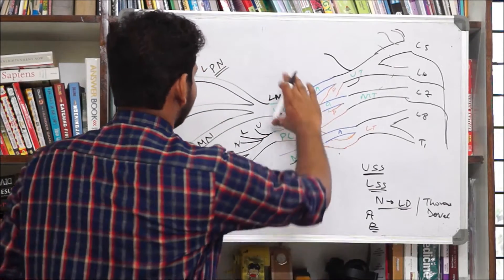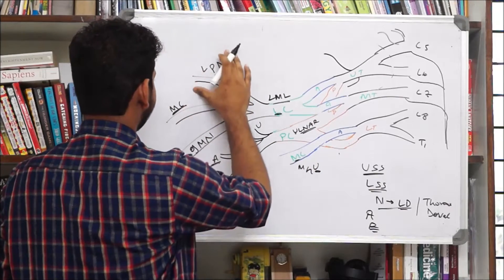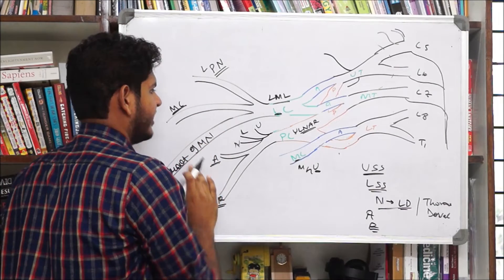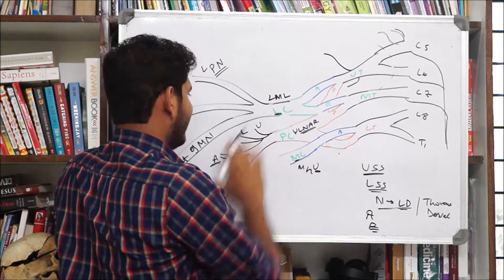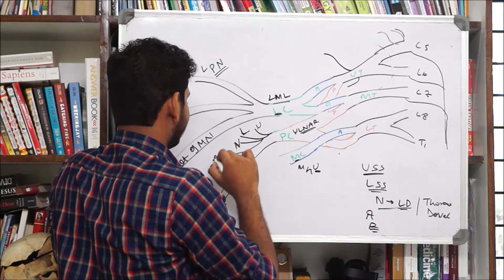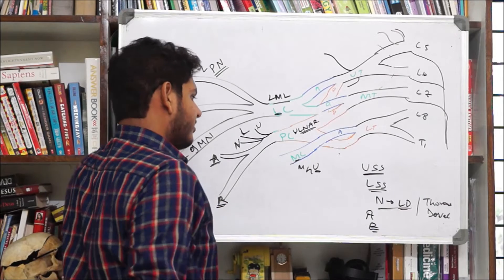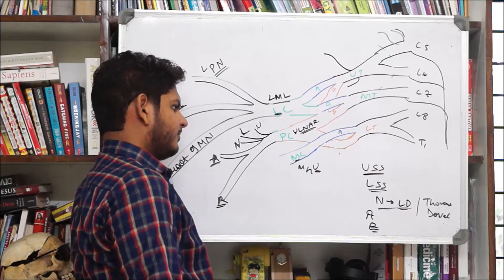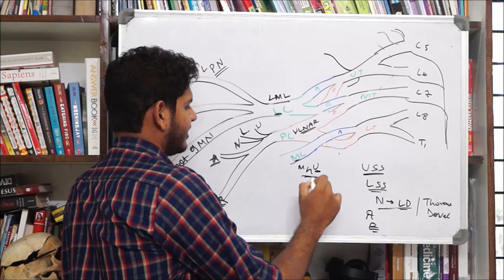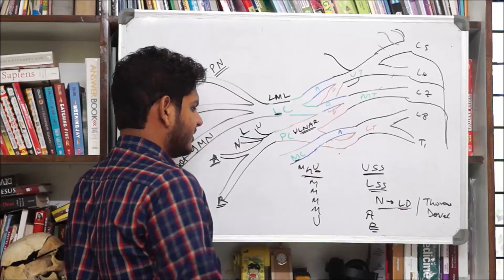Let's revise again. Lateral cord — it is LML: lateral pectoral, musculocutaneous, lateral root of medial nerve. Posterior cord — we have ulnar mnemonic: upper subscapular, lower subscapular, nerve to latissimus dorsi, axillary nerve and then radial nerve. Coming to the last cord, that is the medial cord. The medial cord will have 5 branches — M 4 times and U once.